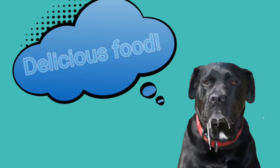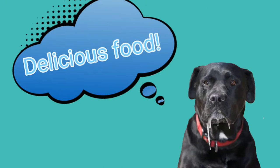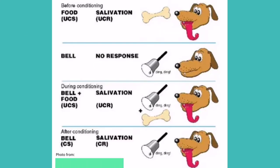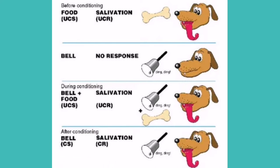He noticed dogs would salivate at the sight of food, which is described as an unconditioned response. He tested his theory by ringing a bell when feeding them over a period of time, then removed the food and just rang the bell. The dogs salivated just at the sound of the bell, indicating a conditioned response to external stimuli. The dogs had begun to associate the bell sound with being fed, and the bell was now considered a conditioned stimulus.